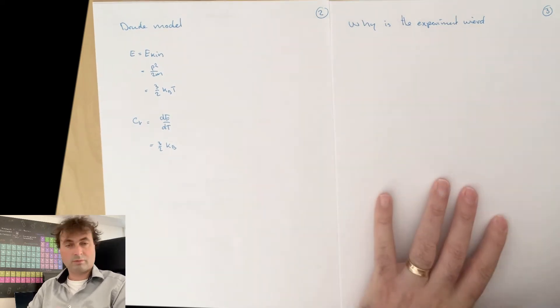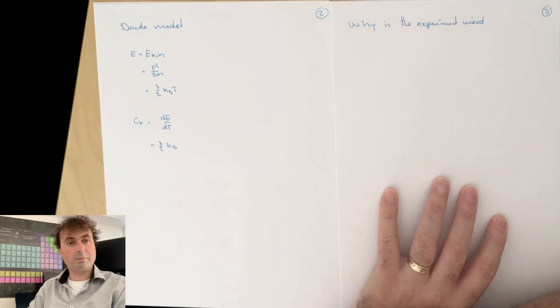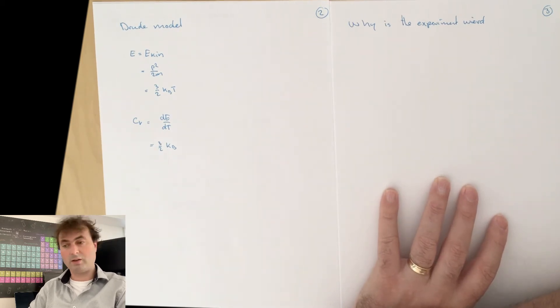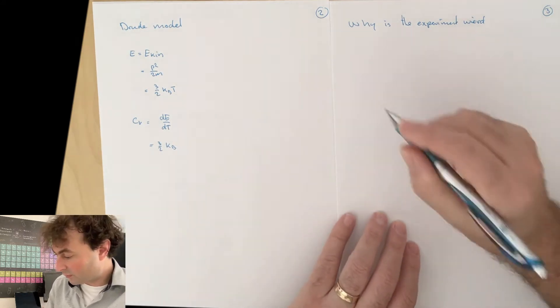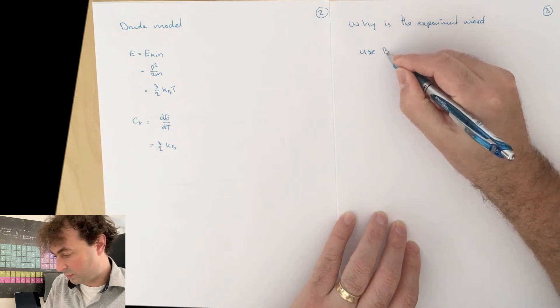For that, we can see if we can calculate the specific heat and show what it means when the specific heat of a certain material at a certain temperature is zero. And we can use Boltzmann statistics in order to calculate the specific heat.